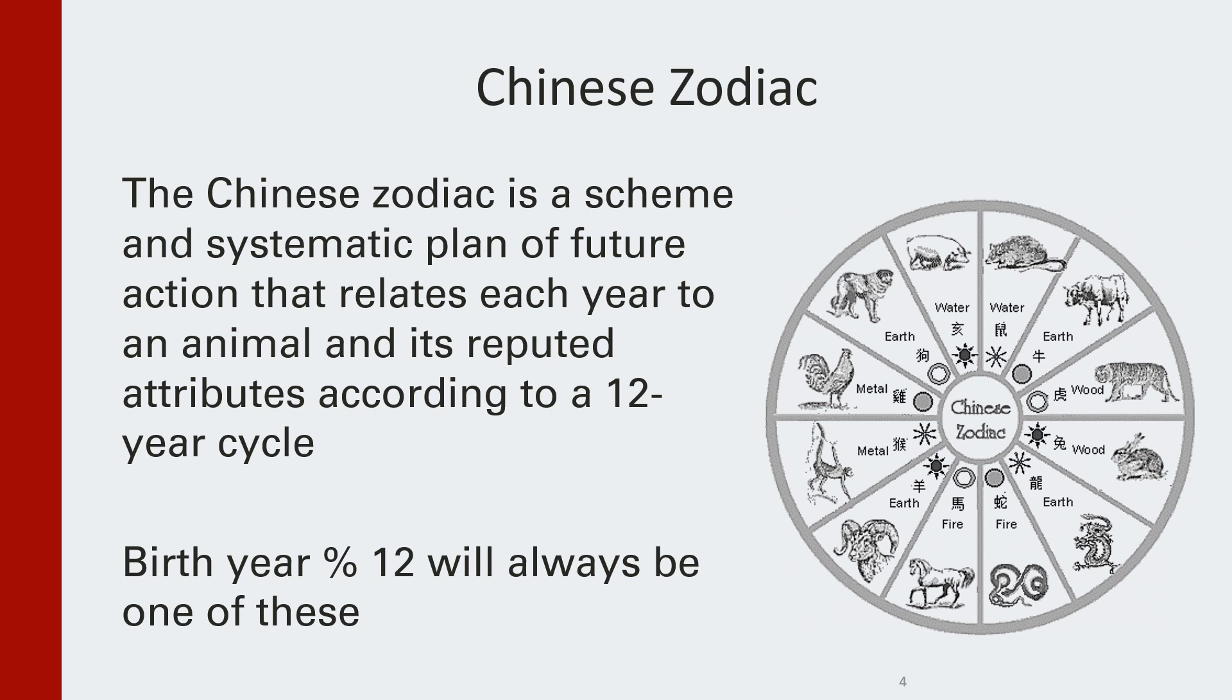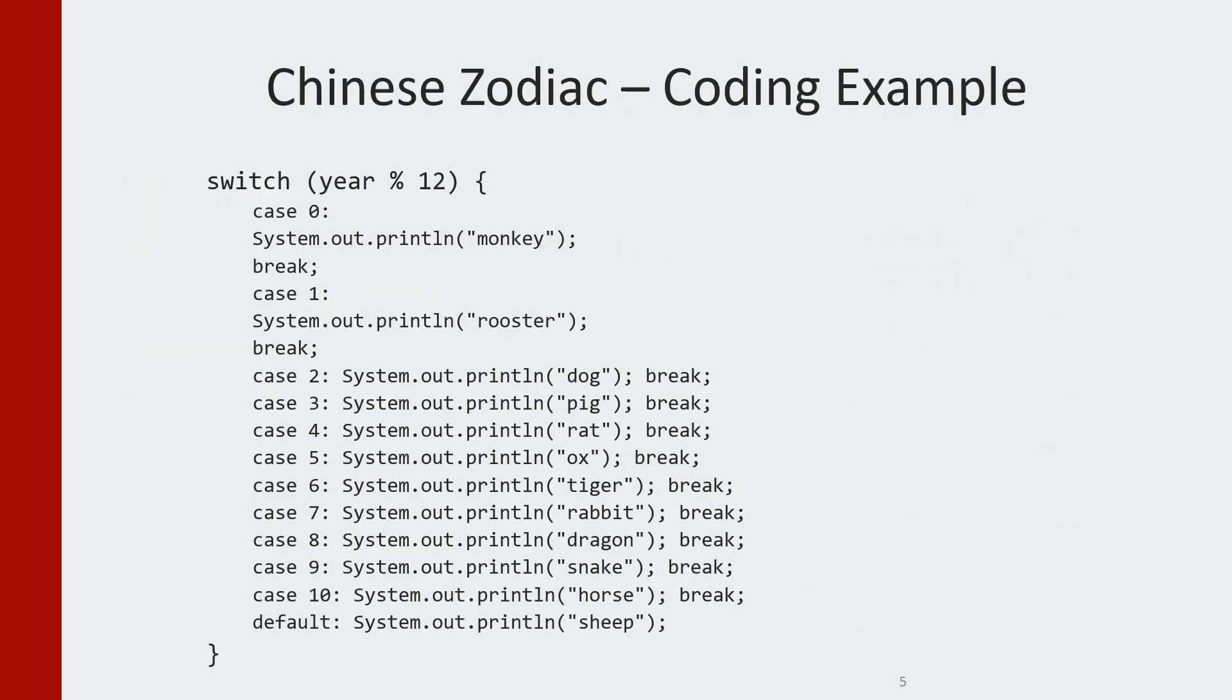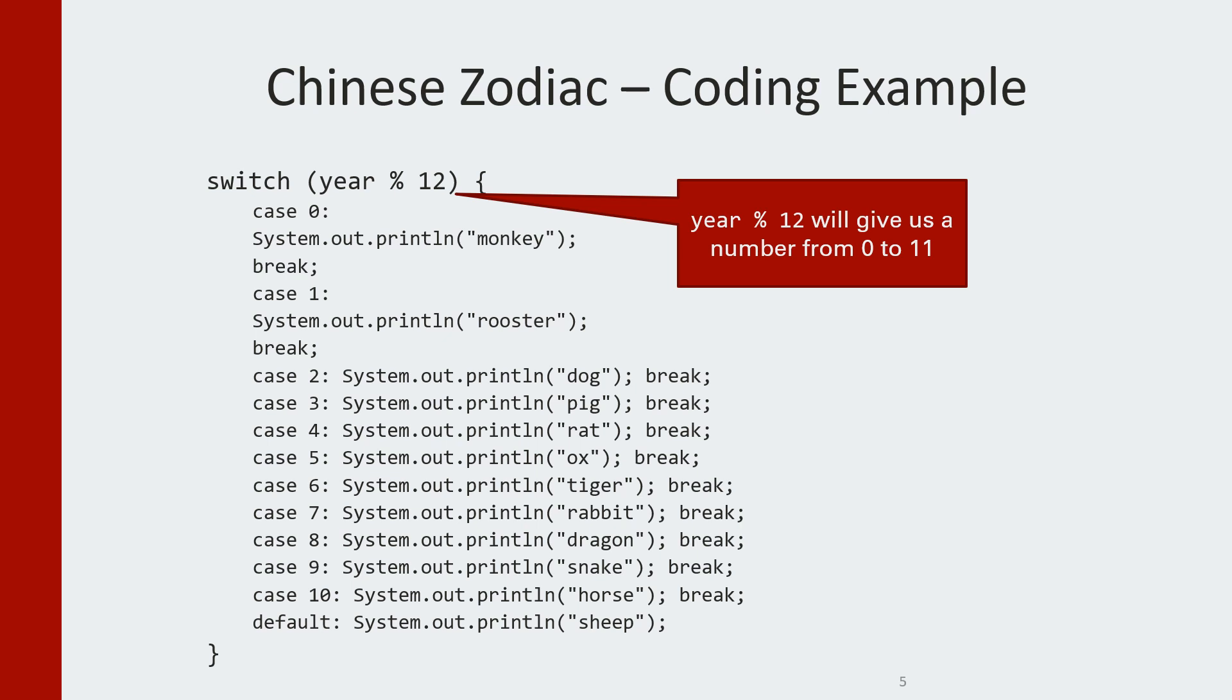For example, if you were born in 1989 you would be year of the snake. The way that you would write a switch statement using these 12 cases is as follows. Remember that we had the user give us the year and now we're going to mod it by 12, which is going to give us a number from 0 to 11. So I actually have the distinct cases of 0 through 11, and so each of those cases are going to be saved.